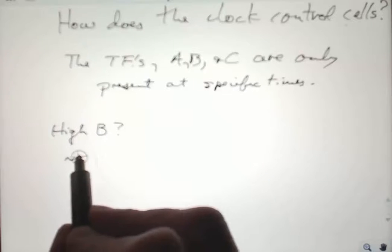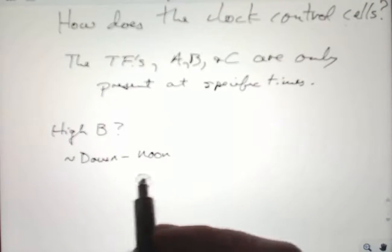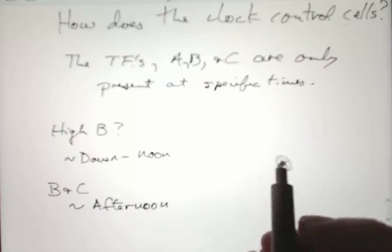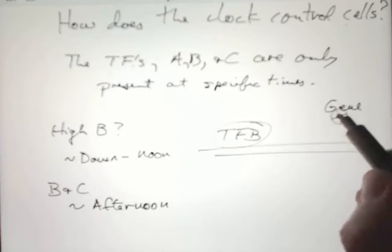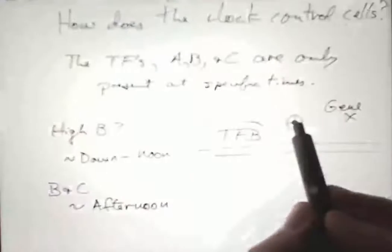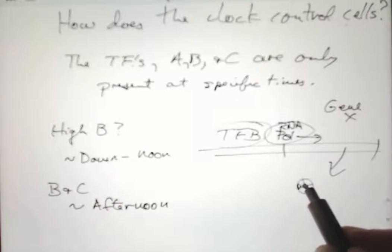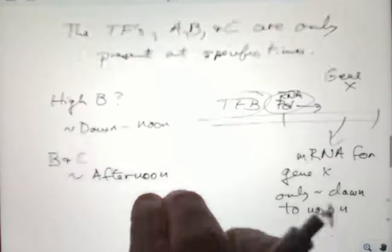High B indicates a particular time, some period starting at around dawn until maybe noon, about a four, five, six-hour period. B and C together would happen only in the afternoon because B has to be around for a while before it induces C. When transcription factor B is high, it'll bind to enhancer sites for other genes, say gene X. You get messenger RNA for gene X, and that only happens in that period of approximately dawn to noon. So whatever that protein does is only going to happen in that period from about dawn to noon.